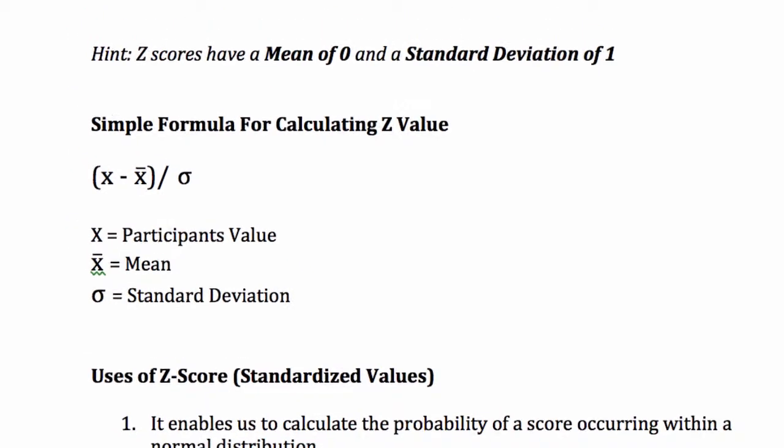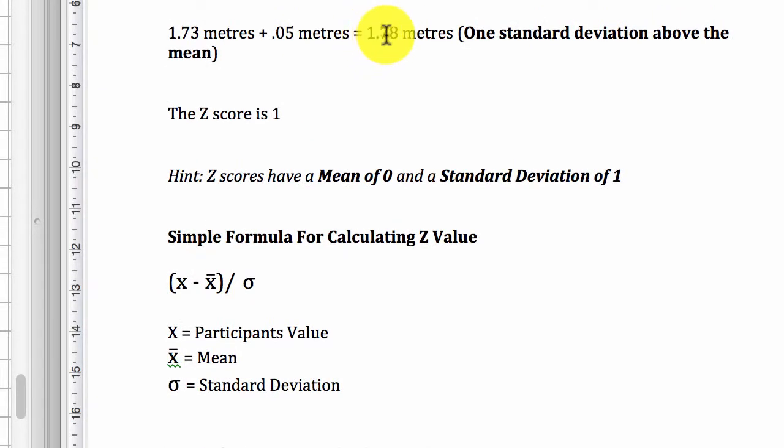Now, this student that is 1.78 meters tall, how many students is this student taller than? We can look at the table of normal distribution to find out at the Z score of 1, if you are 1.78 meters tall, how many people are you taller than?